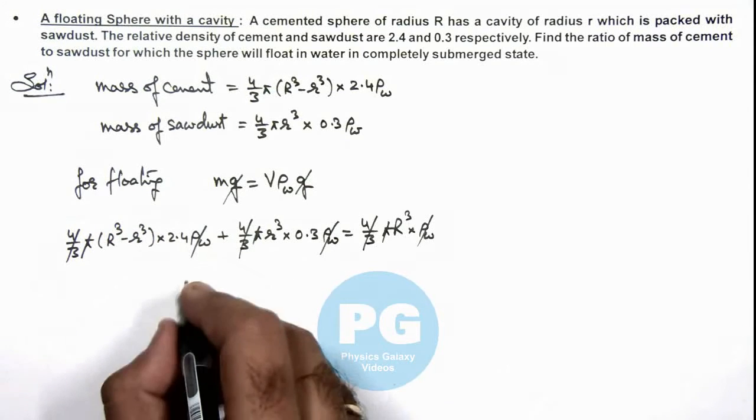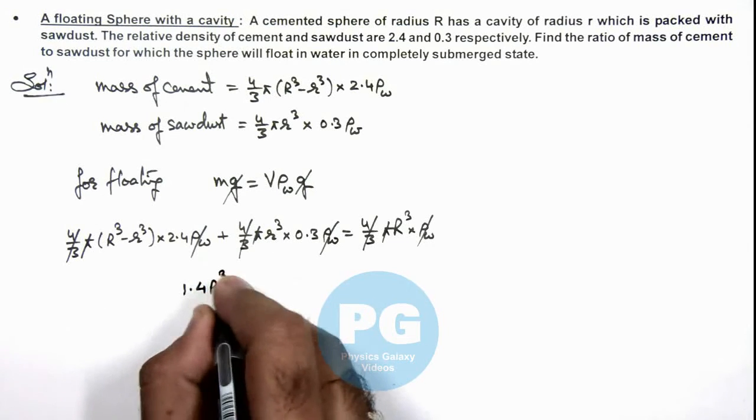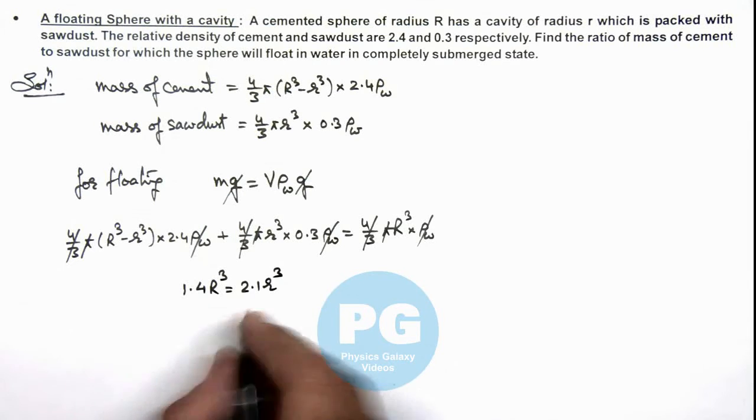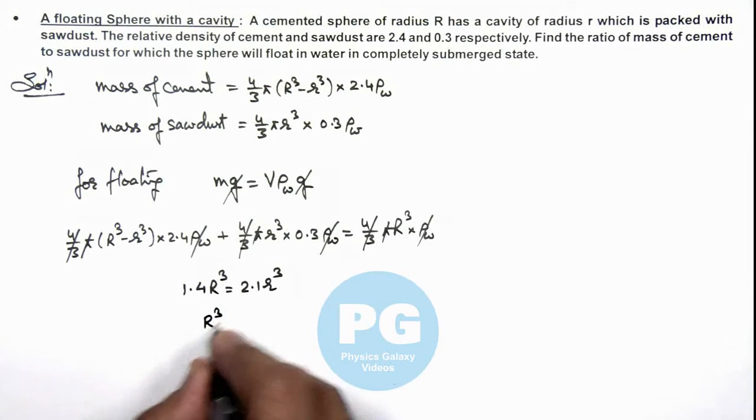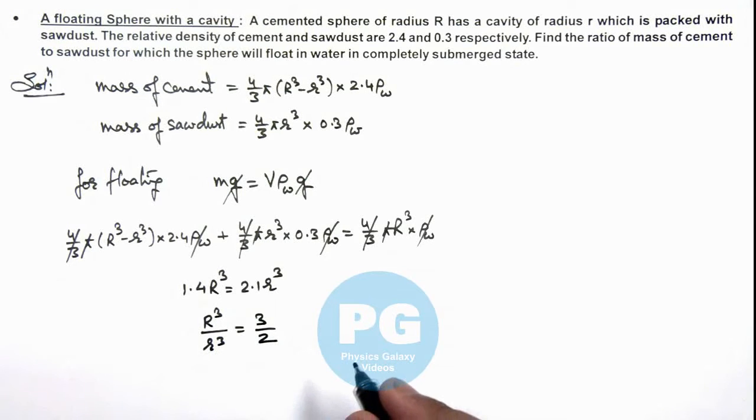So on simplifying this we are getting 1.4 R³ is equal to 2.1 small r³, which gives us the value of R³ by small r³ is equal to 3 by 2. And in this situation if we calculate, here we can continue.